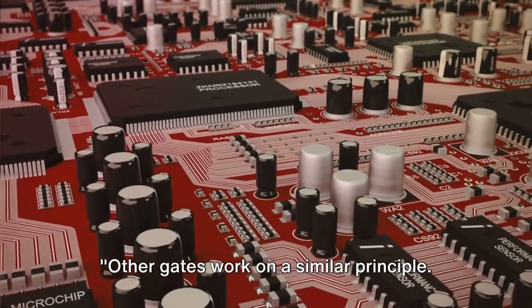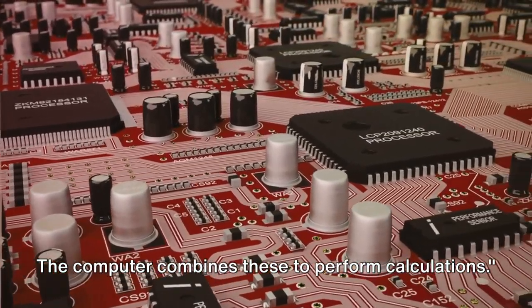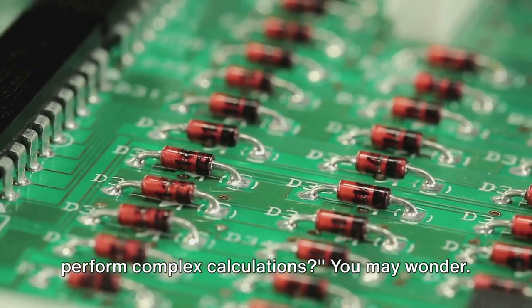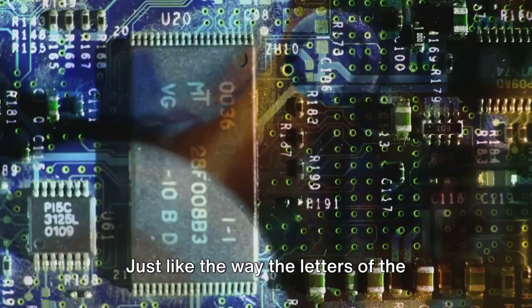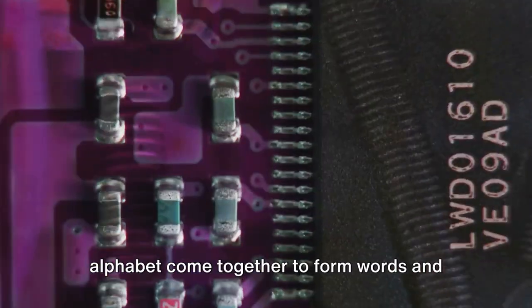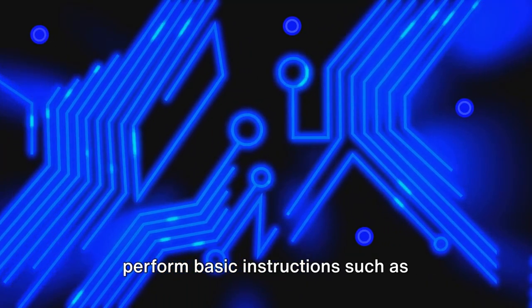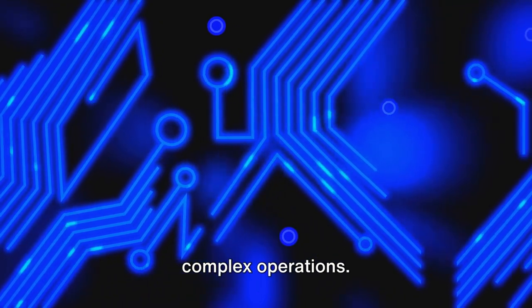Other gates work on a similar principle. The computer combines these to perform calculations. Now, how do these gates come together to perform complex calculations? You may wonder. The magic lies in the combination of these logic gates. Just like the way the letters of the alphabet come together to form words and sentences, logic gates can be combined to perform basic instructions such as arithmetic operations and even more complex operations.